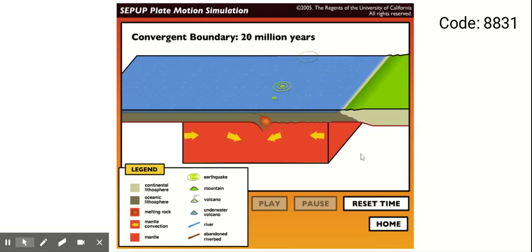We call that process where one plate goes under another subduction. This type of subduction is a little different than the one that formed the Andes, but very similar in most ways.